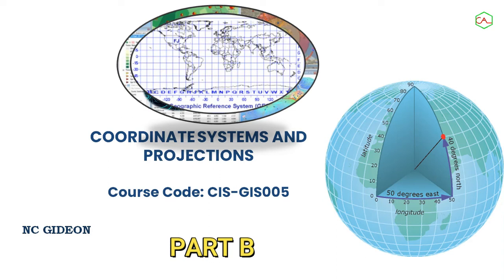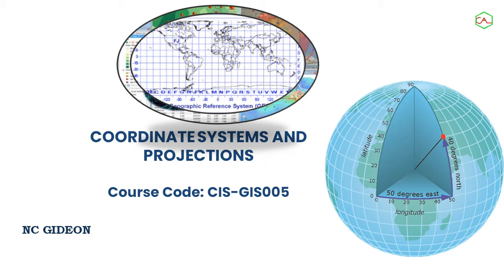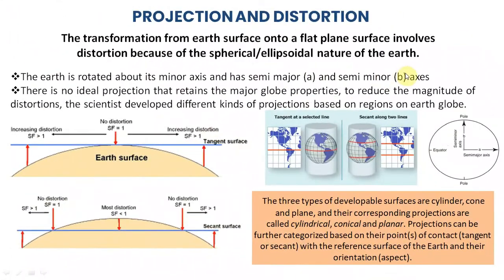I want to look at coordinate systems and locations, Part B. We've actually released the first video on this section. This coordinate system and projection course code CISGIS005 is divided into about four parts, so this is section B. If you've followed us, you need to check section A of this video first. Section B will go into some other classification modes that we didn't discuss in the first part, and after this part we'll go into the third and final parts.